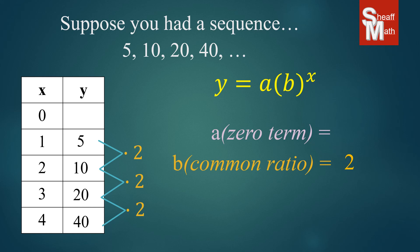Then to find our zero term, we simply divide 5 by 2, and we get 2.5. And so that is our zero term. We put them into the generic equation. And we have our final answer.